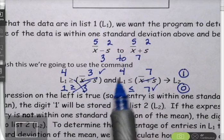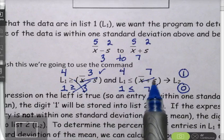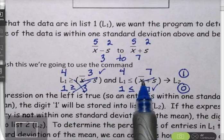And then it's going to check to see if that 4 is less than or equal to the upper boundary of 7, one standard deviation added to the mean, which it is.